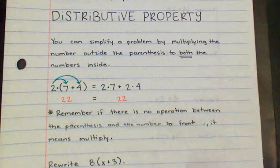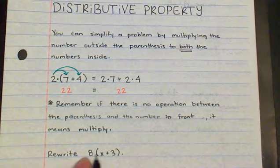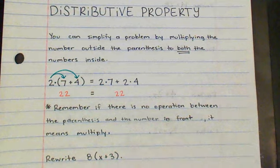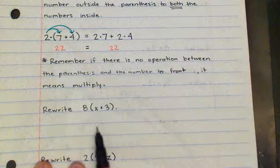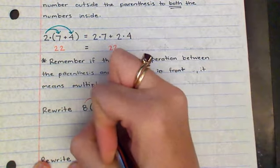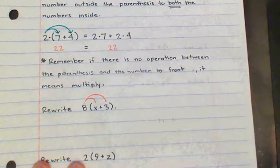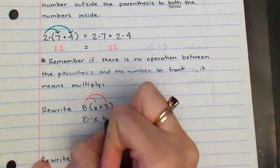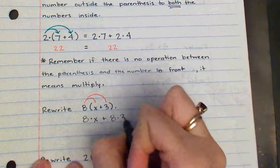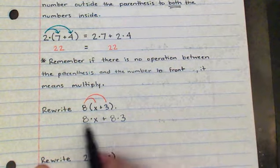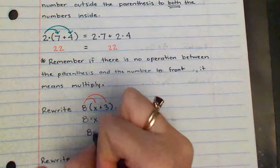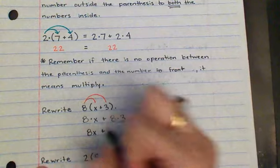Remember, if there is no operation between the parentheses and the number in front of it — so here it's just an 8 hanging out in front — it does mean to multiply. Using arrows is super helpful for remembering to distribute to everything. So 8 times (x plus 3) gives 8 times x plus 8 times 3, which simplifies to 8x plus 24. I don't know what x equals, so it stays as a variable.